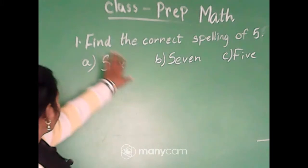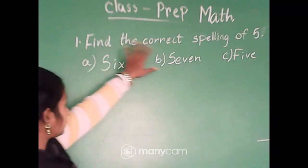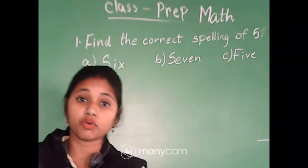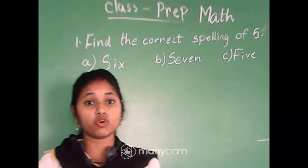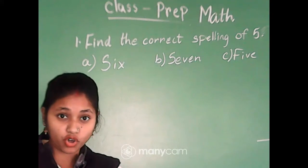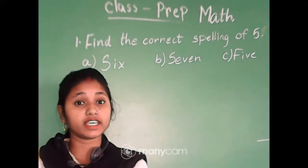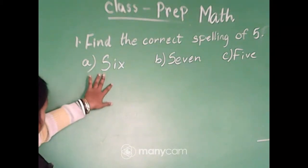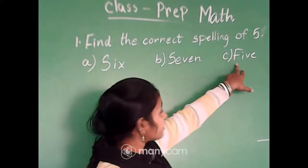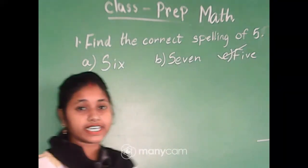First question is find the correct spelling of five. So we will start telling from number names: one O-N-E-1, two T-W-O-2, three T-H-R-E-E-3, four F-O-U-R-4, five F-I-V-E-5. So what is the spelling of five? F-I-V-E-5. This is S-I-X-6, S-E-V-E-N-7, and this is F-I-V-E-5. So we will take option C. We will take option C.